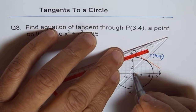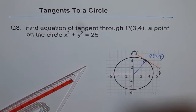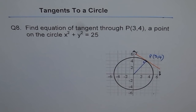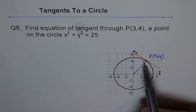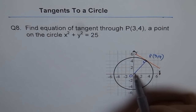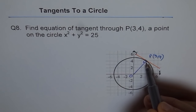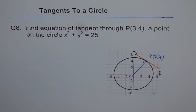So if I draw this radius from the origin to point (3, 4), then we know that the radius and the tangent will be perpendicular. That means I have joined point (3, 4) with the center, the origin (0, 0). The slope of the tangent is the negative reciprocal of the slope of the radius OP. We are going to use this to find the equation of the tangent line through point (3, 4).